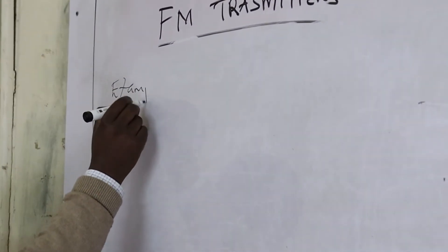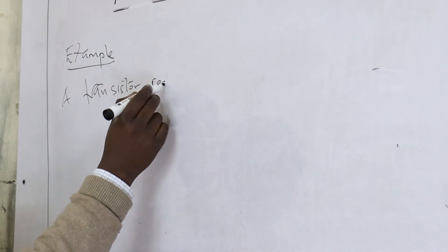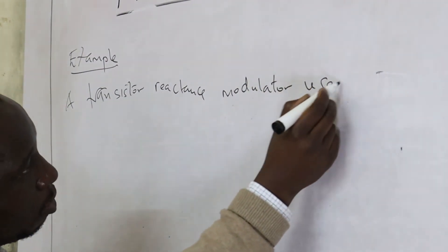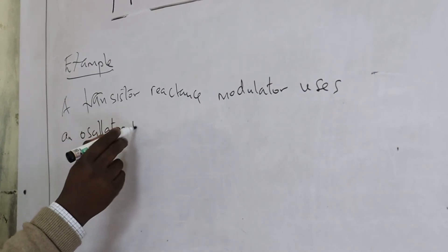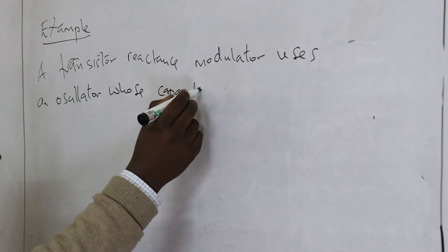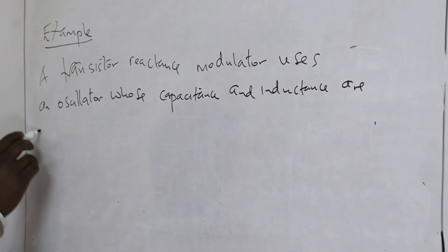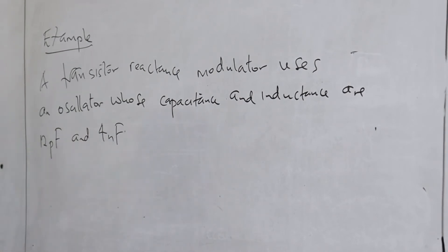An example: a transistor reactance modulator uses an oscillator whose capacitance and inductance are 12 picofarads and 4 nanohenries respectively.